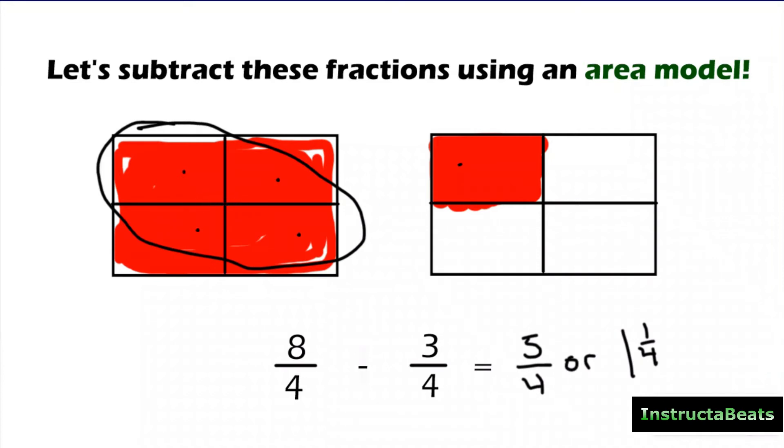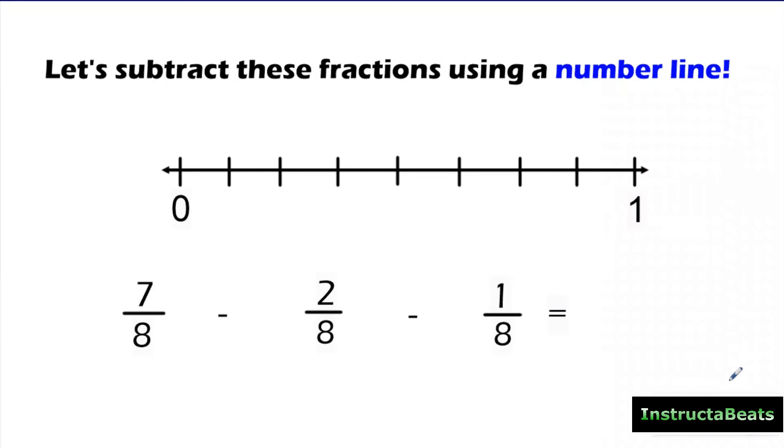Let's take a look at the number line now. So here's a number line. And we want to do 7/8 minus 2/8 minus 1/8. So I'm going to use a number line. And first of all, whenever I come to a number line, I need to circle my whole numbers. That helps me know that I need 8 pieces in between 0 and 1. And again, not 8 lines, 8 spaces. So let's just double check. I have 1 space, 2, 3, 4, 5, 6, 7, 8. So I have 8 spaces in between 0 and 1. So my denominator is correct.